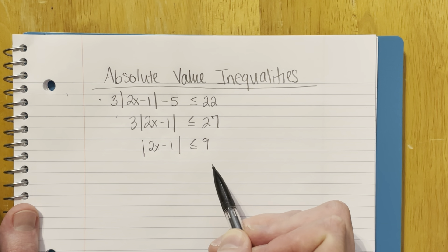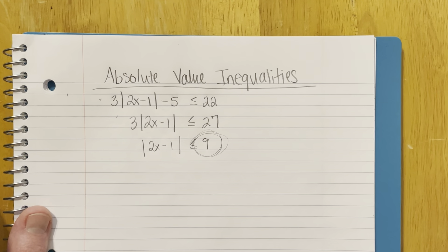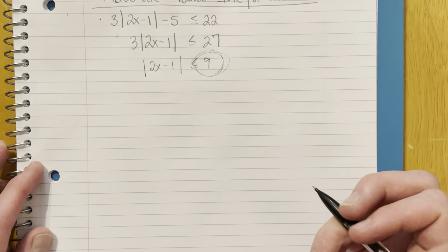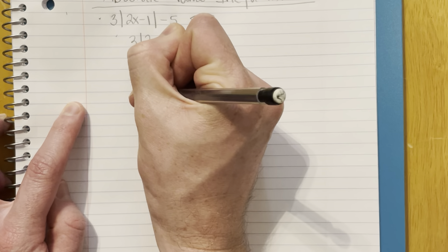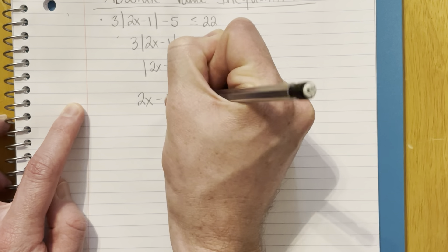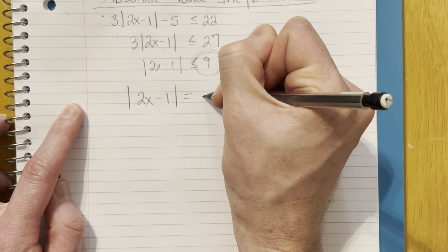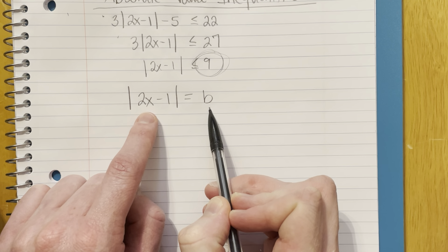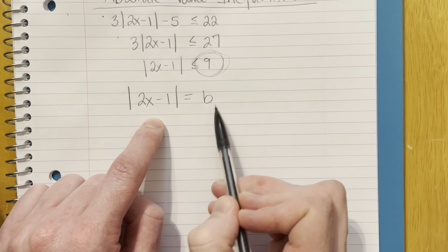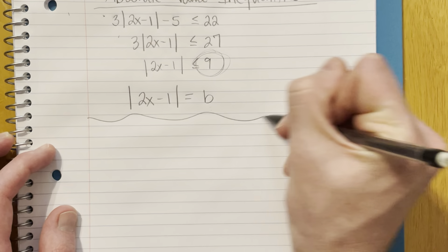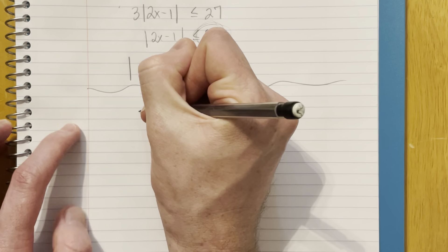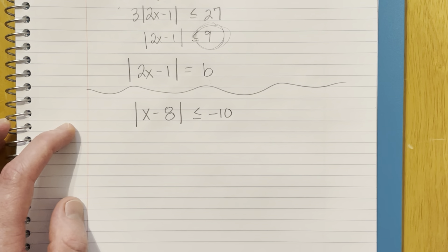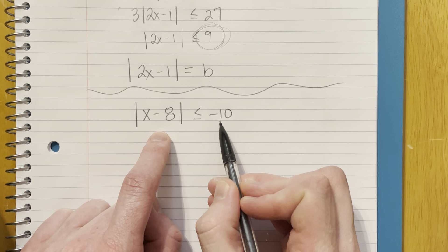For a special case, we want to think about what happens when it's a negative value on the other side of the equation. Back in module one we looked at things like what if we had 2x minus 1 equals a negative value — we had a question that said something like what value of b would make this equation have no solution, and that meant it had to have a negative value. So if we had an absolute value inequality where we isolate it down and end up with something like the absolute value of x minus 8 is less than or equal to negative 10...